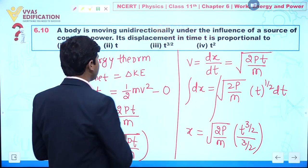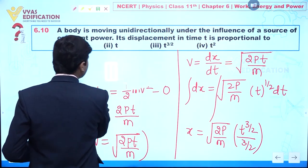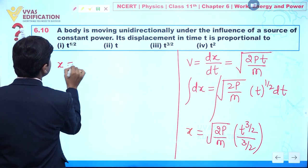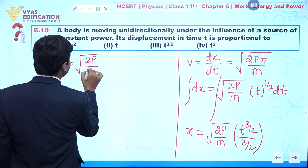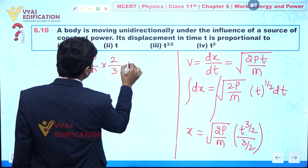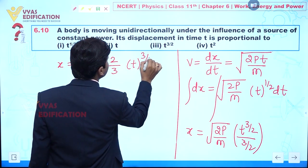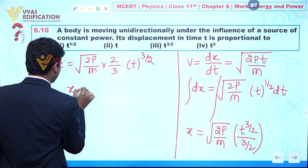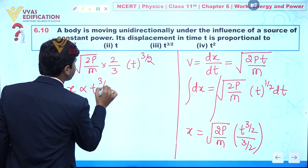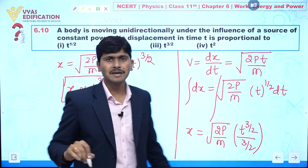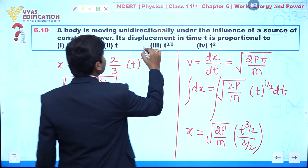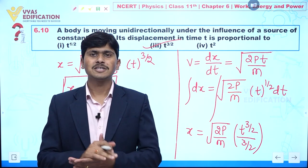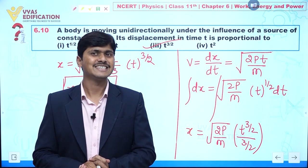So the value of x equals the square root of 2P/m multiplied by 2/3 multiplied by t to the power 3/2. Therefore, displacement is directly proportional to t to the power 3/2. So option number 3 is correct. This is how we calculate displacement as a function of time when power is constant.